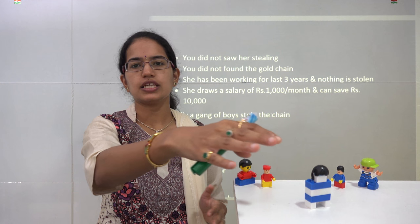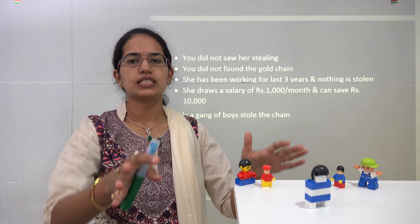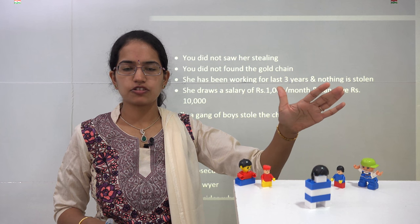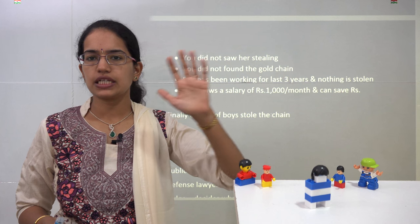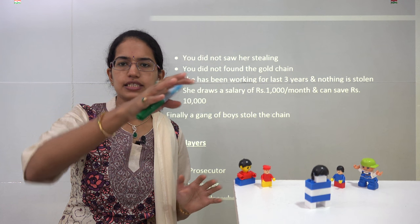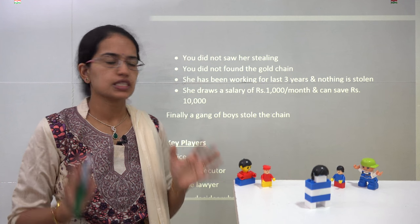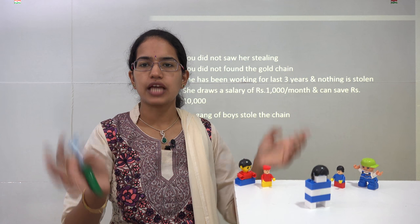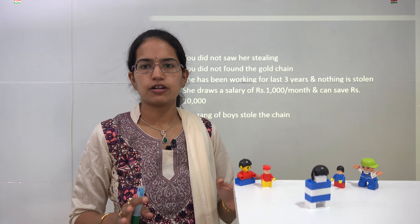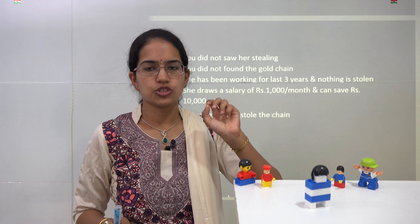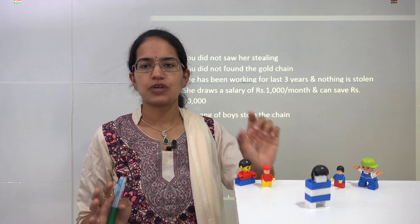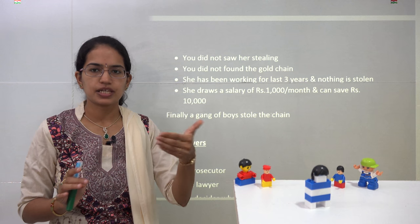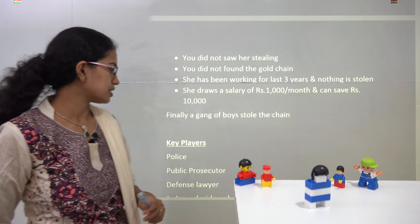The judge, as you can see, is blind — meaning he is impartial. He is not in favor of rich or poor, and impartially decides the case. That's how the criminal justice system works. Finally, the police found that there was a gang of boys roaming around in the city, and that gang stole the chain — which was eventually recovered. That is the story used to help you understand the criminal justice system.